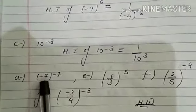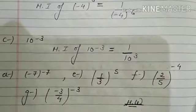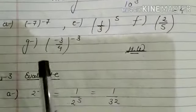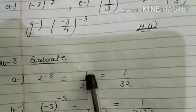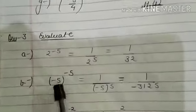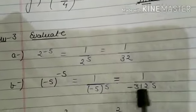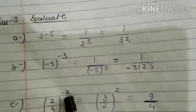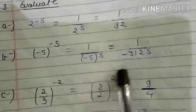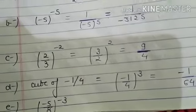Parts d, e, f, g will be homework for you. Now Question 3 — evaluate: Part a: 2 to the power minus 5 can be written as 1 upon 2 to the power 5, giving 1 upon 32. Part b: minus 5 to the power minus 5 equals 1 upon minus 5 to the power 5, giving minus 1 upon 3125. Part c: minus 2 by 3 to the power minus 2 equals 3 by 2 to the power 2, giving 9 by 4. Part d: minus 1 by 4 to the power cube — 4 cubed gives 64 — giving minus 1 upon 64. We will solve Question 4 in the next video.